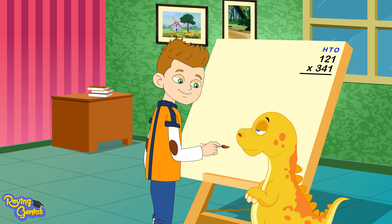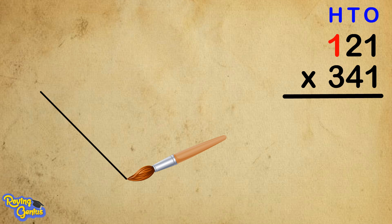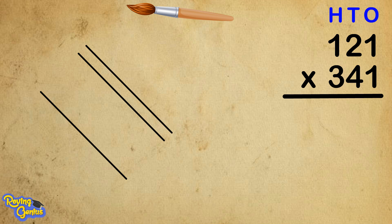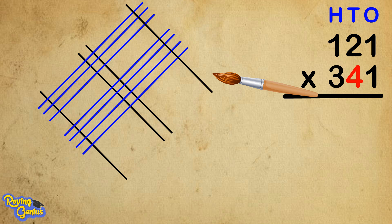121 into 341. Let me try this one. One line, a space, two lines, a space, and one line. This represents 121. Three lines, a space, four lines, a space, and then one line. This represents 341.